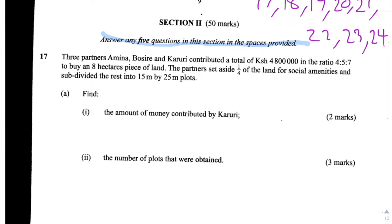This says three partners — Amina, Bosire and Karuri — contributed a total of 4,800,000 shillings in the ratio 4:5:7 to buy an 8 hectare piece of land. The partners set aside a quarter of the land for social amenities and subdivided the rest into 15 by 25 metre plots.